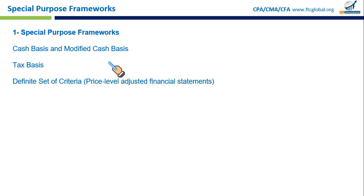The third type is the definite set of criteria — price level adjusted financial statements. This refers to financial statements that follow specific non-GAAP rules, such as adjusting for price level changes. Inflation is a persistent increase in the general price level, so for example, a company operating in Argentina — a historically high-inflation country — might adjust its financial statements to account for the changing value of money over time.